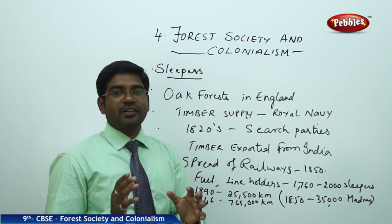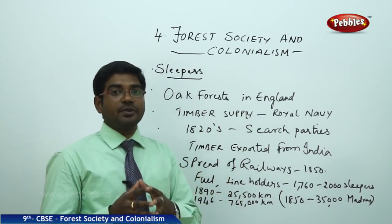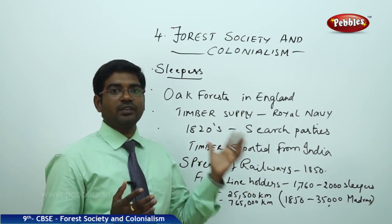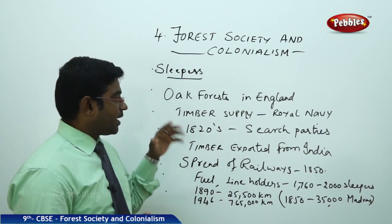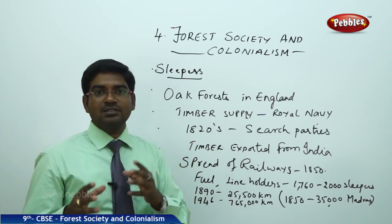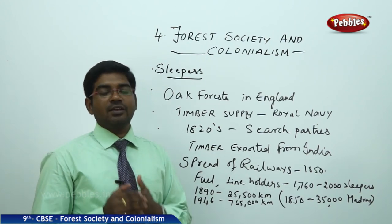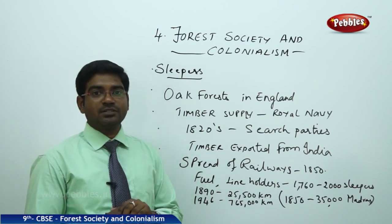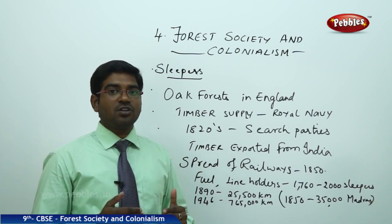The arrival of the railway track network in India also paved the way for massive destruction of forests. The oak forests in England were starting to disappear because they were used in large numbers to build ships, which were necessary to carry loads from India to other countries and to maintain the Royal Navy ships. To find a substitute, the Britishers sent search teams in the 1820s to India, which has a large amount of forest. The teams found that India has huge amounts of timber available, and orders were given to cut down timber trees and export timber from India to England.